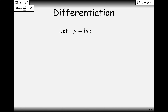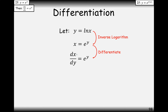Now let's look at differentiating y equals ln x. There's a slightly complicated reason, but a nice shortcut rule at the end. First, we rearrange by inversing the logarithm — the opposite of ln something is e-ing something. So if we e both sides, that cancels out the ln, giving e to the y equals x. Now I know how to differentiate e to the something. Differentiating with respect to y — treating it the other way around — gives dx by dy equals e to the y.